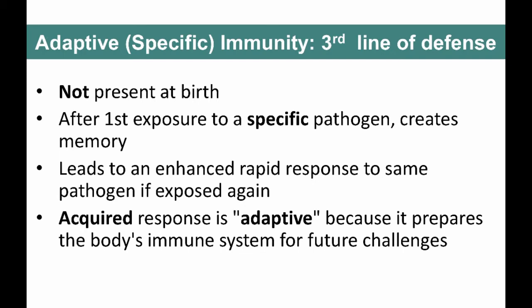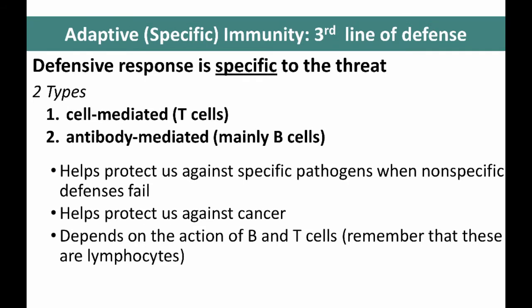Once we have been exposed to something and had an initial immune response, this arm of our immune system leads to a much more rapid response after we're exposed to the same pathogen again. You might not even realize that you had a second infection with a particular kind of bacteria or virus because your immune system knocks it down so fast. One of the critical things about the adaptive immune response is that the response is very specific to the kind of threat encountered — specific on a sub-molecular level.